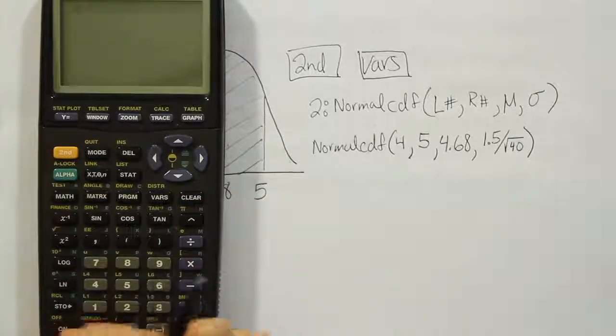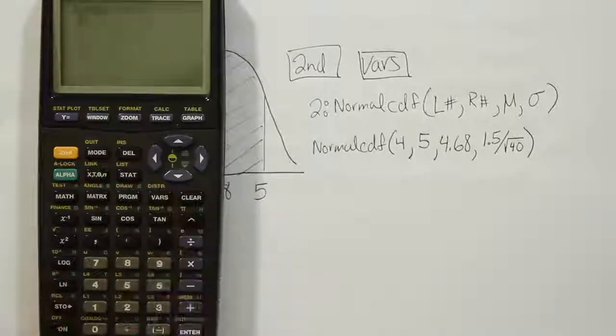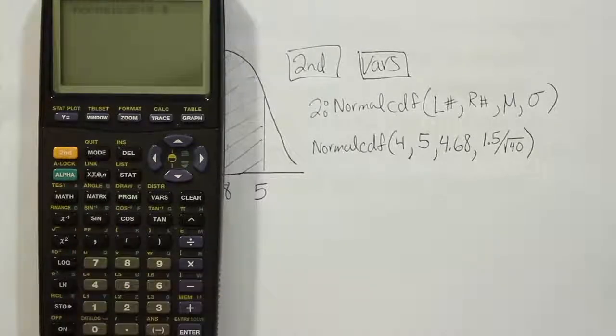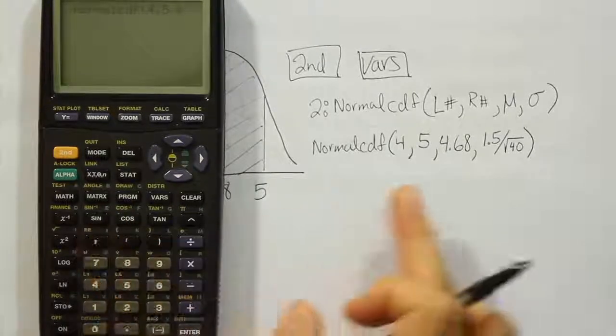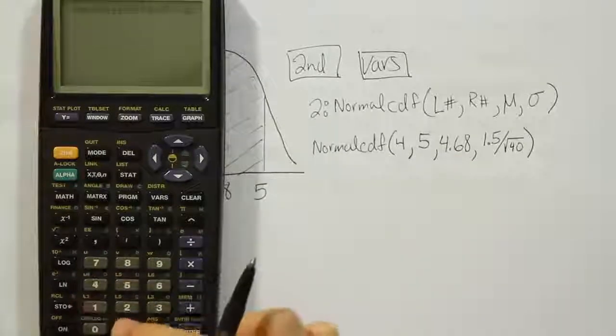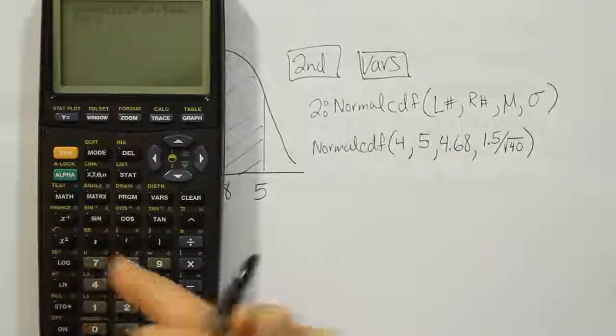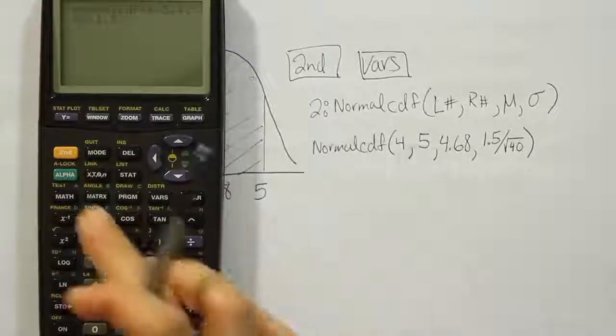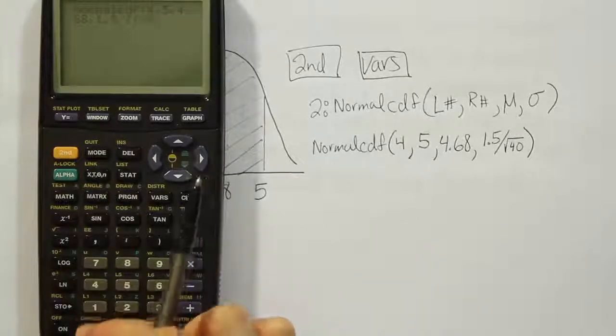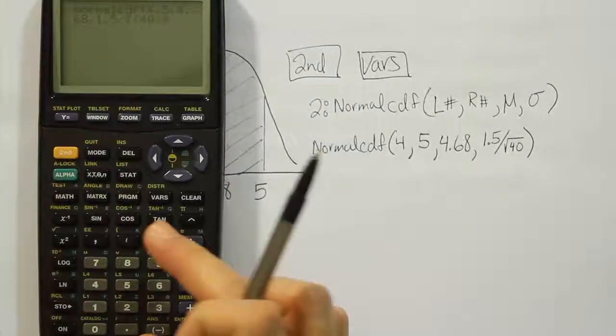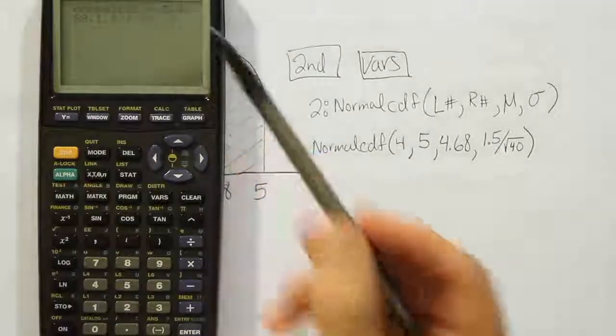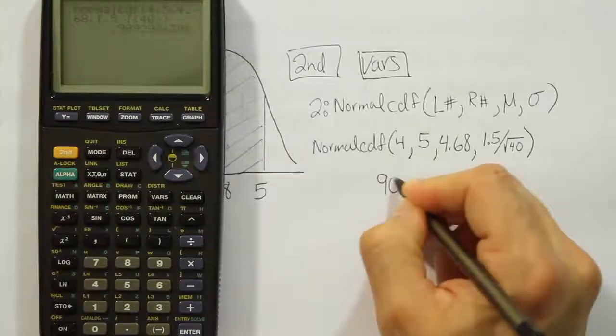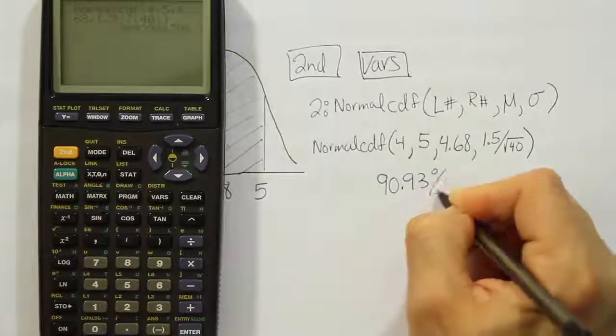We're going to turn on the calculator. We're going to press second vars, take option number two. Give it the left number 4, comma, the right number 5, comma, 4.68, comma, the 1.5 divided by the square root of 40. Close up that parenthesis, and then close it up one more time for the big parenthesis. And when you're done, you hit enter, you'll find the answer is 90.93%.